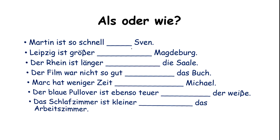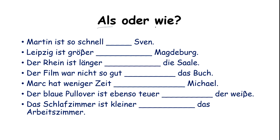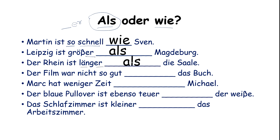Now we see some examples of where we put als or wie. Als is used when there is a comparison — adjective with -er. Wie is used with so — so, adjective, wie — no change in adjective. Summary: adjective with -er plus als; or so plus adjective plus wie.